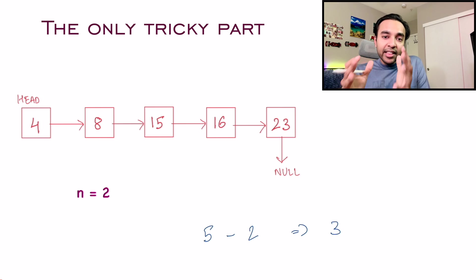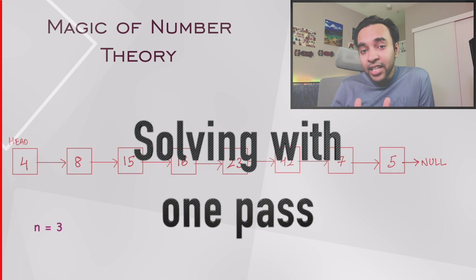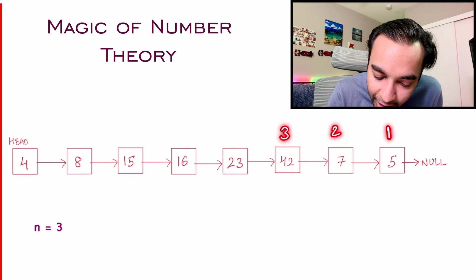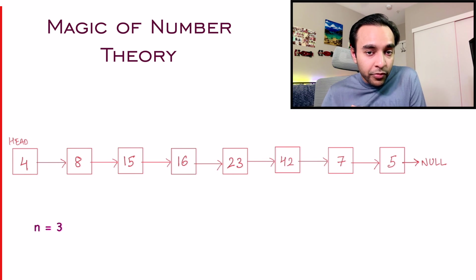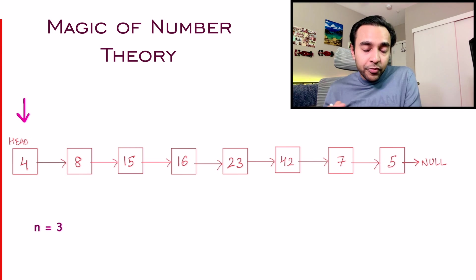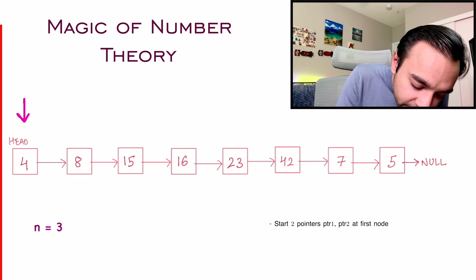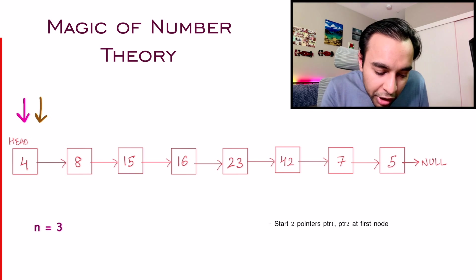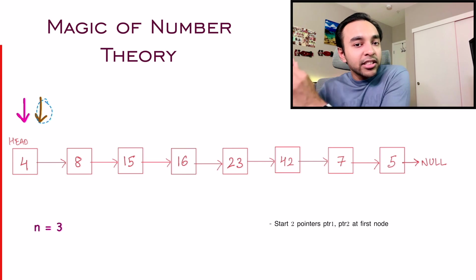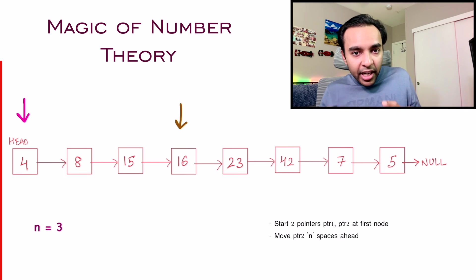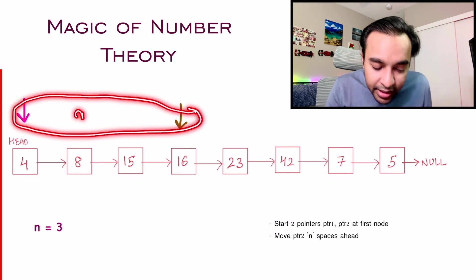Let us take up a more generic example and try to come up with a solution. This time you have a bigger list and the value of n is 3. So you know you have to remove the third node from the very end — that means you have to get rid of the node with value 42 — but you only have to do it in one iteration. When you traverse a list, you take a pointer that starts from head and goes all the way to null. This time we are going to take two pointers, and right now both of them start at head. Now there is a tiny bit of number theory involved — think about what happens if you move one pointer n spaces ahead.